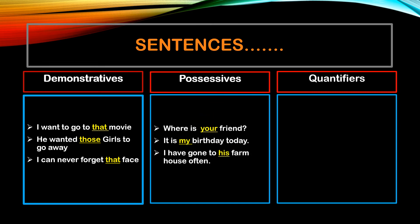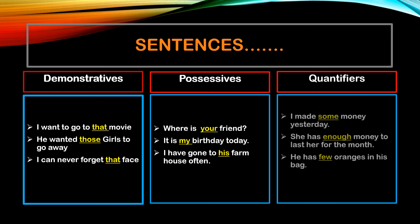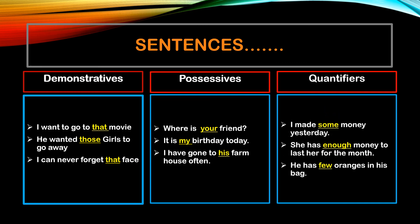Coming to possessive determiners: where is your friend? It is my birthday today. I have gone to his farmhouse often. So 'your,' 'my,' 'his' are your determiners. Then coming to quantifiers, just read this sentence, children.